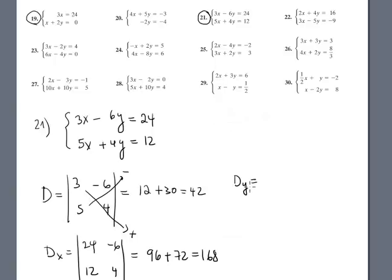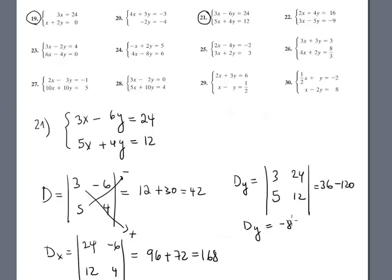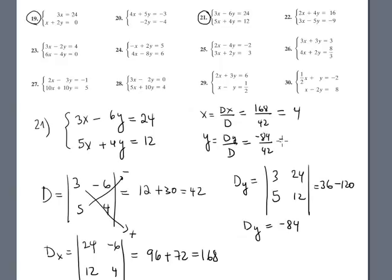Dy: the matrix you replace is 3, 5 and 24, 12. Multiplication is 36 minus 120. So Dy equals negative 84. Now by Cramer's Rule: x equals Dx over D — 168 divided by 42 equals 4. And y equals Dy over D — negative 84 divided by 42 equals negative 2. The solution is (4, -2).